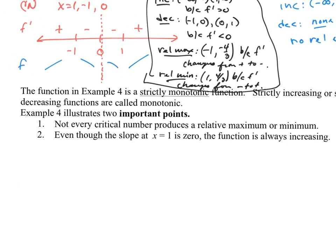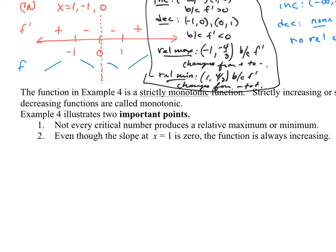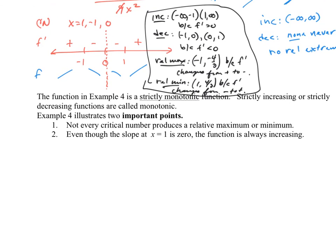The function in example four is a strictly monotonic function — monotonic means strictly increasing or strictly decreasing. Example four illustrates two important points: not every critical number produces a relative max or min, and even though the slope at x equals one is zero, the function is always increasing. The first derivative test finds relative extrema, and you must justify them by stating how f prime changes sign. Have a great day.